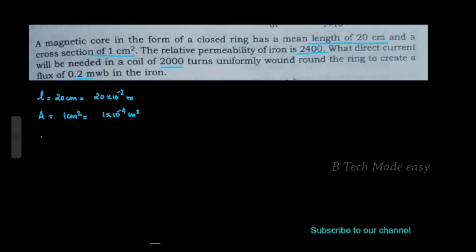Relative permeability of the iron: mu R is 2,400. Number of turns N is equal to 2,000. Flux φ is equal to 0.2 milliweber, that is 0.2 into 10 raise to minus 3 weber.